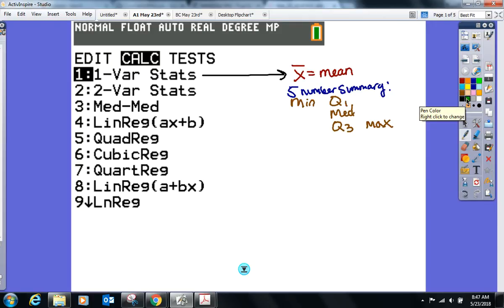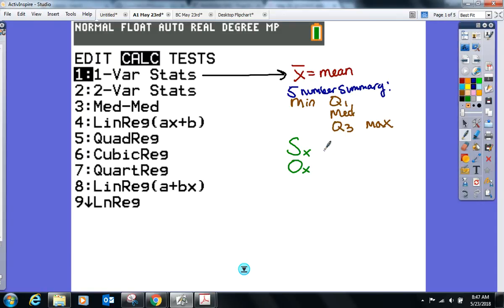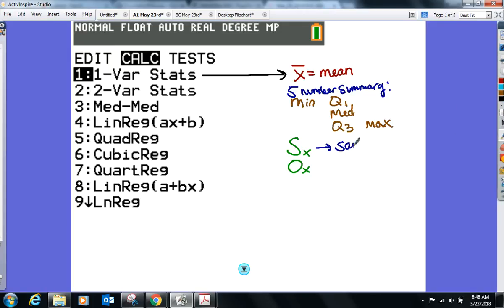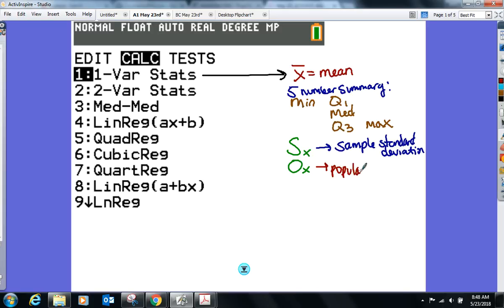What else is on one var stat that we've used in the past? Try it out if you want to. I'm sure you've got a list already created in there of numbers. Go to one var stat. Calculate it. There's something else we've definitely talked about in there. Carol? Standard deviation. Correct. There's two types of standard deviation. There's SX and there's OX. OX. Anybody remember what SX was called?